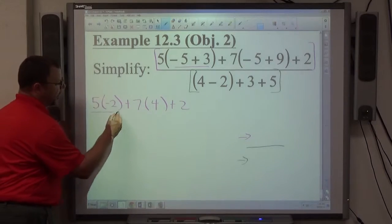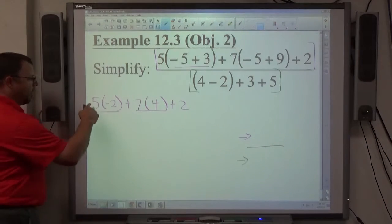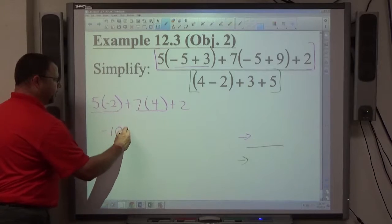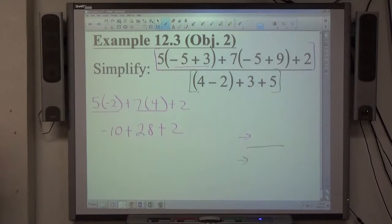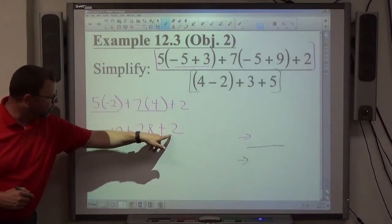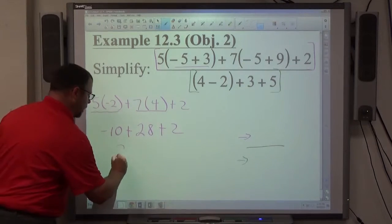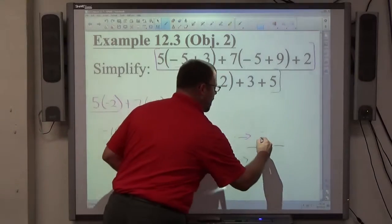If I continue on, I've got a multiplication, a multiplication, and an addition. 5 and negative 2 makes negative 10. 7 times 4 is 28, and plus 2 is still plus 2. Altogether, 30 minus 10 is equal to 20. So my top number is positive 20.